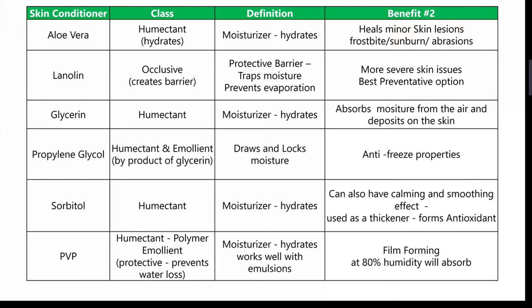When we're talking about the different emollients, we can break those down into different classes. On the left we have the type of skin conditioner and then moving next to it, what class it's under. For example, you have aloe vera, which is a humectant, which really is like a hydrator. It's a moisturizer, it hydrates the teats. A benefit would be that it would heal minor skin lesions. It can help treat frostbite, sunburn, abrasions. It's like a first line of defense.